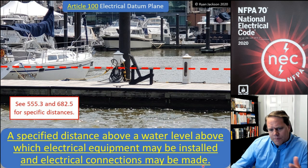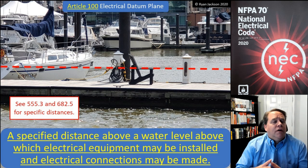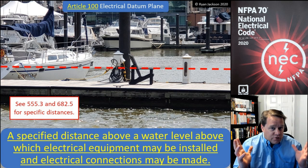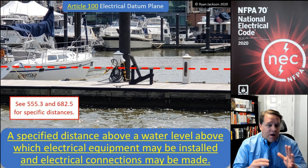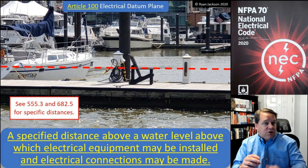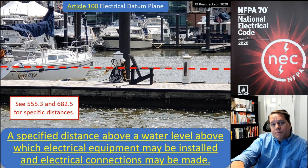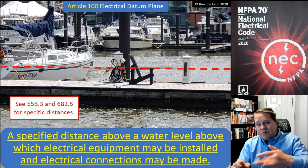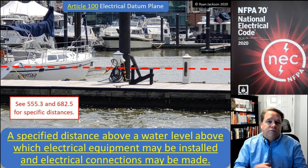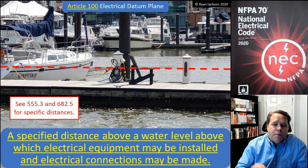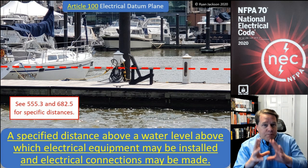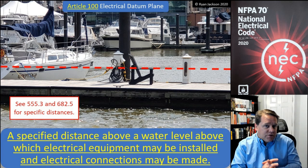The electrical datum plane depends on a few different factors. First, is this area subject to tides? If we have rising and falling tides, that's going to change the electrical datum plane. If my body of water stays relatively the same — obviously lakes and rivers rise and fall — but whether or not you are subject to tidal fluctuation has a big factor on your electrical datum plane.